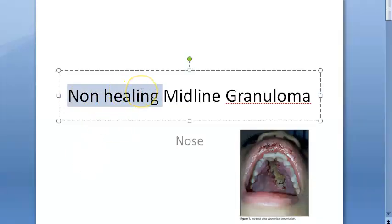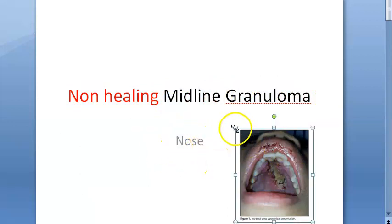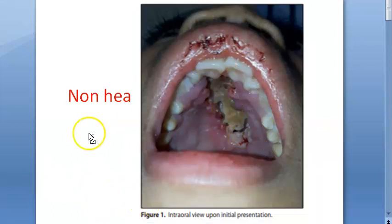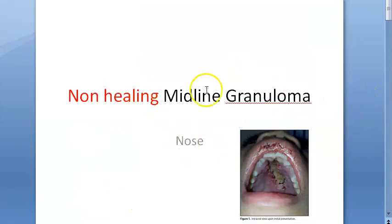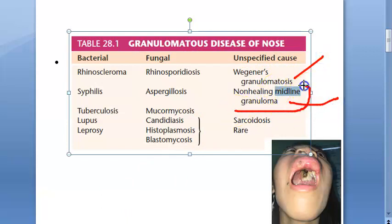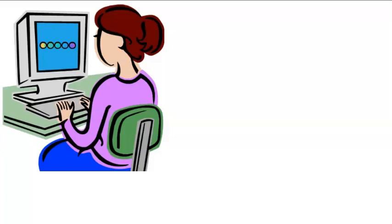In this video we look at non-healing midline granuloma, which is a granulomatous disease of the nose. Looking at the textbook classification of granulomatous disease of the nose, under unspecified causes they list Wegener's granulomatosis, non-healing midline granuloma, and sarcoidosis. So today we are focusing specifically on non-healing midline granuloma.